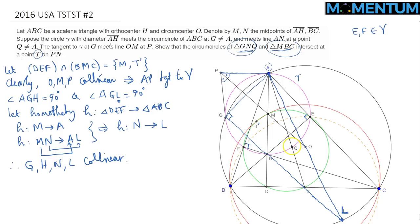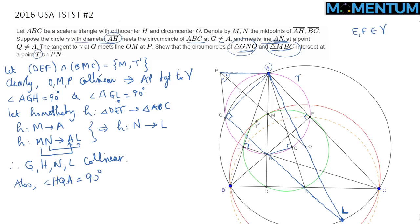By definition, Q is on line AN and is the intersection of AN with circle gamma (the circumcircle of AEF). Because AH is the diameter of gamma, if we connect HQ, then angle AQH = HQN = 90 degrees. So angle HQA equals 90 degrees — something that will be super useful in a few minutes.